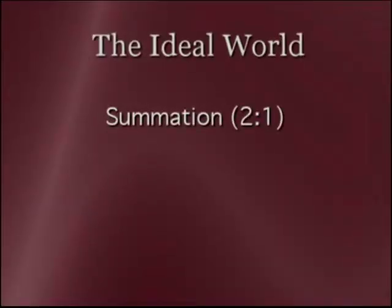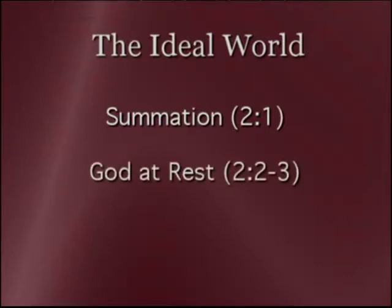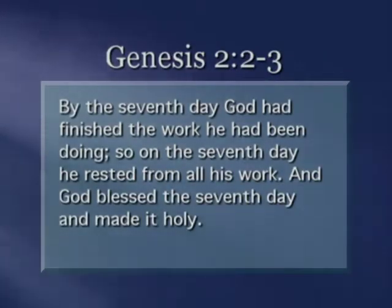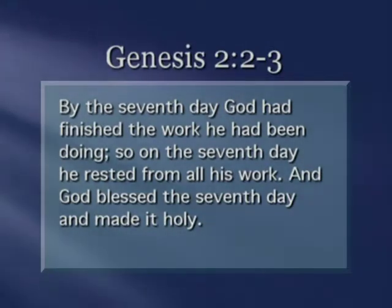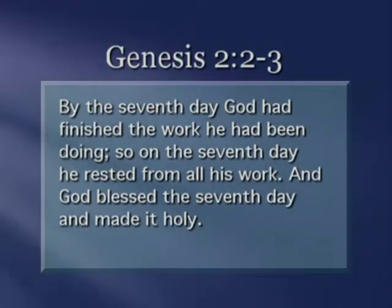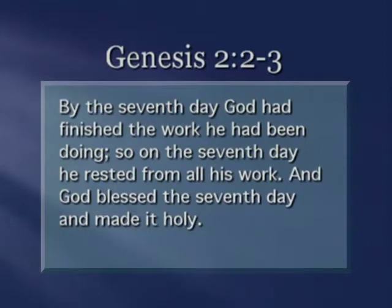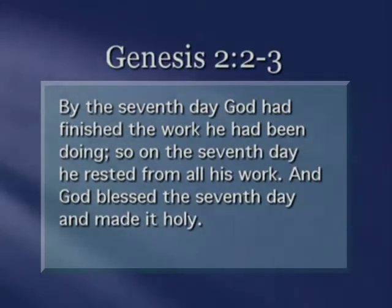This section is structured very simply. It begins in chapter 2 verse 1 with a summary statement that God had finished his creative work, and it concludes in chapter 2 verses 2 and 3 with God at rest. We read: 'By the seventh day God had finished the work he had been doing. So on the seventh day he rested from all his work, and God blessed the seventh day and made it holy.' When Moses described God as entering a state of Sabbath rest, granting a special blessing to that day and making it holy, he declared that the tension between the chaos and God's hovering Spirit had been resolved. God had subdued the darkness, ruled over the chaotic deep, and delighted in his ideally ordered world. The creation story comes to an end with this delightfully peaceful vision of the universe in perfect harmony.